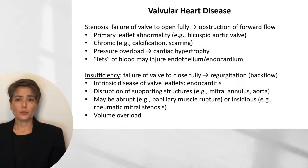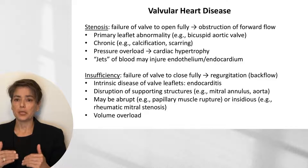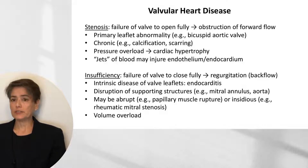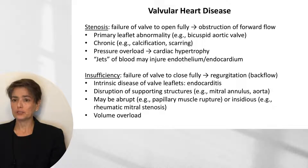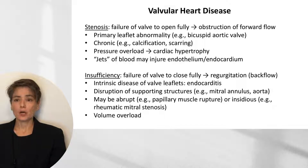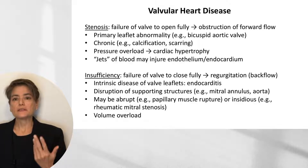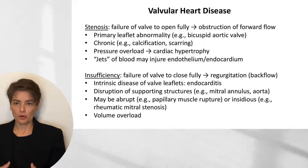We can also get insufficiency, which is failure of a valve to close fully. In this case, we're going to get regurgitation or backflow of blood. This can be due to intrinsic disease of the valve leaflets, such as endocarditis, or through disruption of supporting structures such as the mitral annulus or aorta. This may be abrupt in onset—for example, papillary muscle rupture following a myocardial infarction—or slow and insidious, such as rheumatic mitral stenosis. What we see here is a volume overload, in contrast to the pressure overload seen in stenosis.